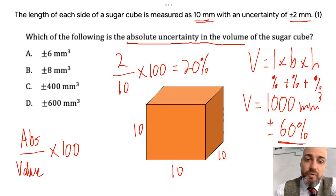Now the question is asking us about the absolute value. So 60% of 1000 millimetres cubed is 600 millimetres cubed, which is essentially D, which is the correct answer. There we go.